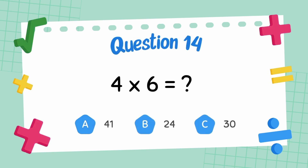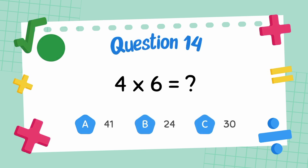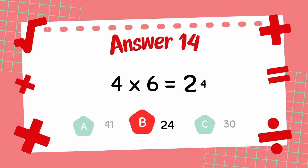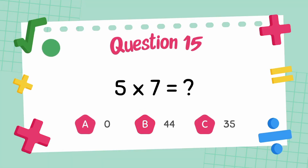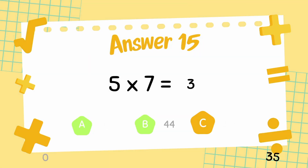What is 4 multiply 6? The answer is 24. What is 5 multiply 7? The answer is 35.